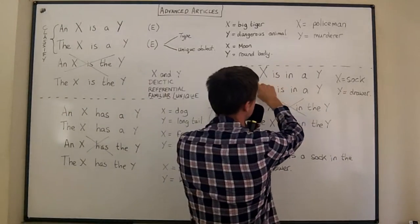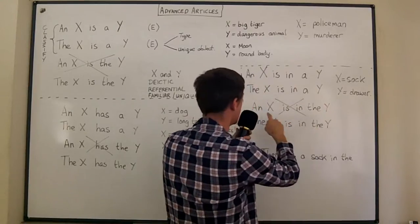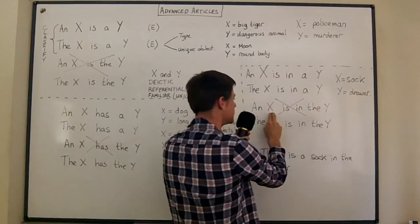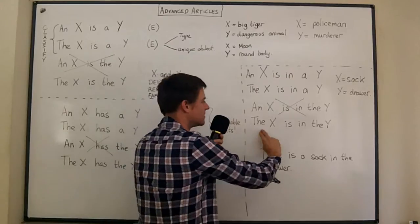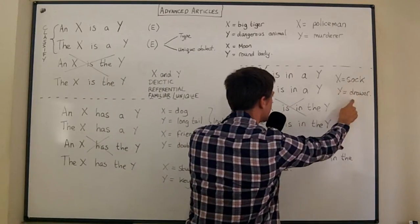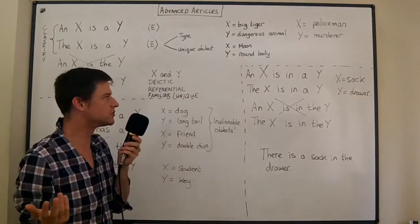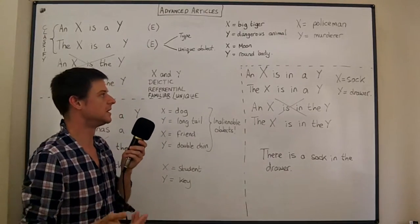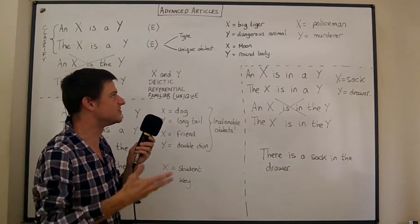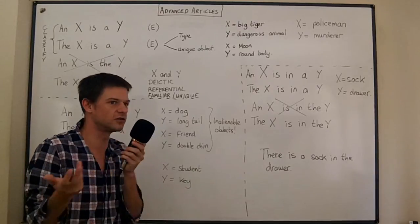An X is in a Y. The X is in a Y. An X is in the Y - I hope to show you that that's unlikely. And the X is in the Y. Let's take sock and drawer. A sock is in a drawer. It's possible, quite unlikely again because it's a very general statement. A sock is in a drawer - any drawer somewhere has some kind of sock. Very low on information.